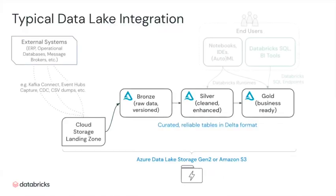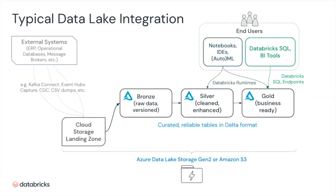Your typical data lake integration starts with landing data — data gets dropped into a cloud storage landing zone and then brought into Databricks. We have the medallion architecture, similar to most data warehousing methodologies. You bring data into a bronze layer — it's the raw data matching the source systems. Then you have a silver layer: a business common model that's cleaned and enhanced, with multiple systems brought together. And then you have a gold layer, which is ready for reporting and set up for specific use cases with dashboards tied directly to it.